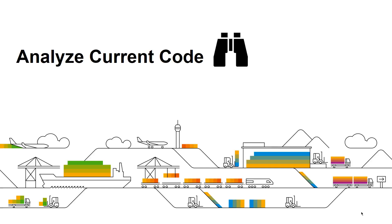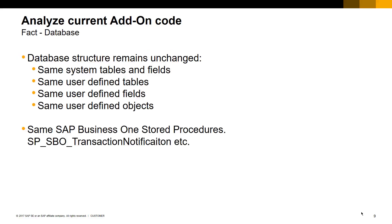Let's look at the first starting point with respect to add-on migration — analysis of our existing solution. If our solution for SAP Business One on Microsoft SQL Server was created using the SAP Business One SDK, and we want to continue to use that investment on SAP HANA, that's fine. As far as SAP Business One for SAP HANA, the database structure remains the same. All system tables and fields, user-defined tables and fields, and user-defined objects are the same. The SP SPO transaction notification stored procedure is also still part of the SAP Business One company database, and also still the same.